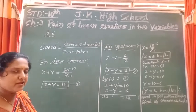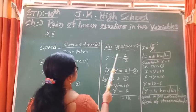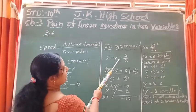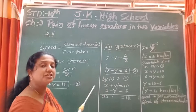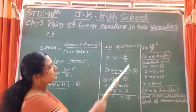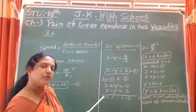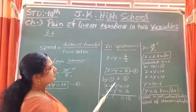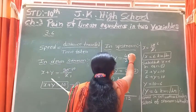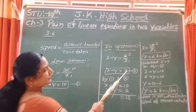In upstream, speed of Ritu is x minus y km per hour. She covered 4 km in 2 hours, so x minus y equals 4 divided by 2. Simplifying, the twos cancel and we get x minus y equals 2. Call this equation number 2.